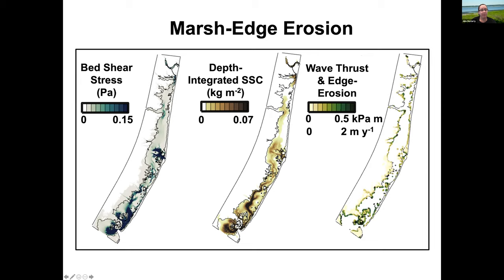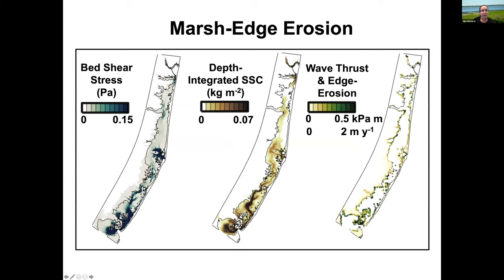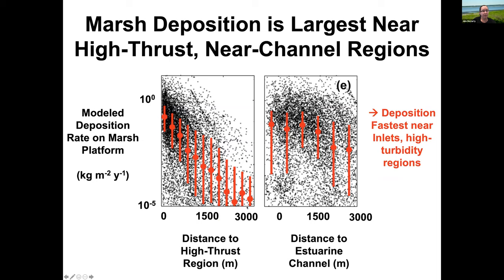We then looked at how eroded sediment and sediment resuspended from the estuary makes its way back onto the marsh. A scatter plot shows modeled deposition on the marsh platform on the y-axis versus distance to a high thrust region on the x-axis. As you get closer to these high thrust regions — primarily near the inlets and downstream of estuarine channels — you get more deposition on the marsh platform.